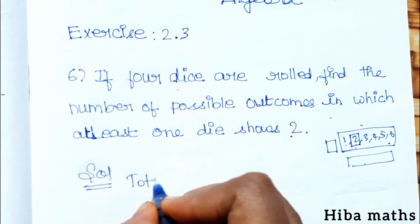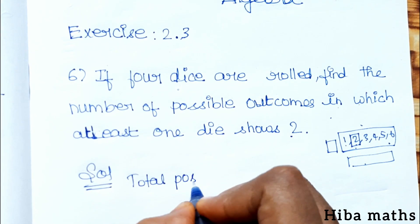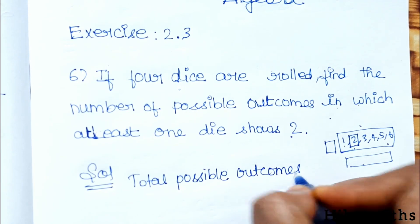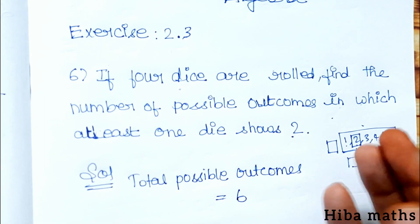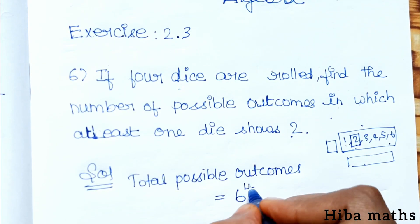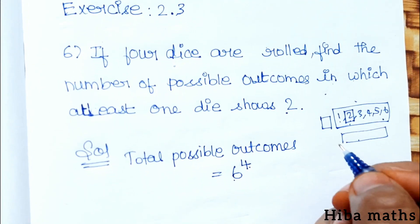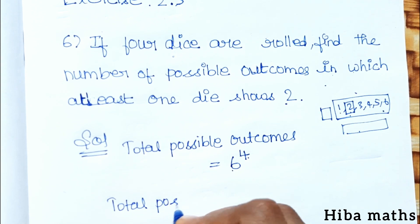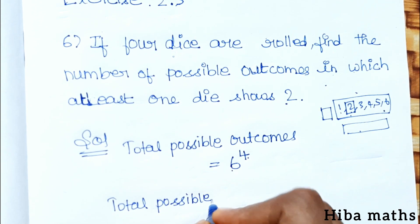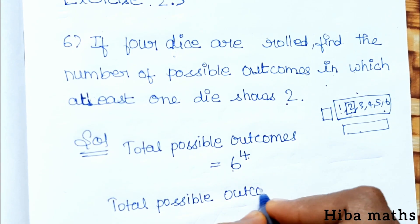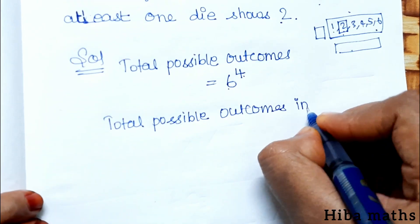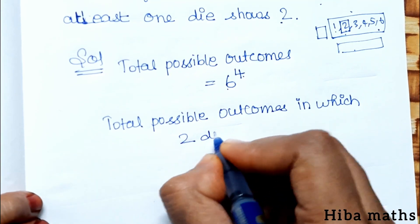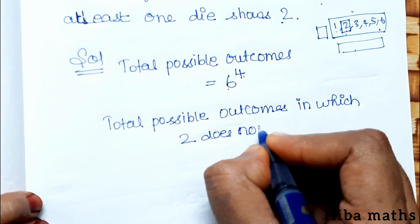Total possible outcomes equals 6 to the power 4. Total possible outcomes in which 2 does not appear...